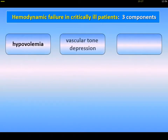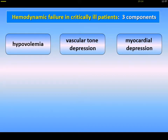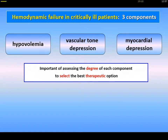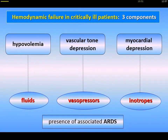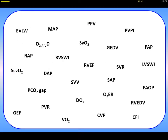You know that hemodynamic failure in critical patients has three important components: first, hypovolemia; vasculotone depression; and myocardial depression. We need to assess each of these components to select the best therapy. For therapies, we have only three categories, which are fluids, vasopressors, and inotropes. But we also need to integrate the presence or not of associated ARDS for our decision. We have many, many variables already described, and I would propose to use a decision tree, which I apply at the bedside every day.